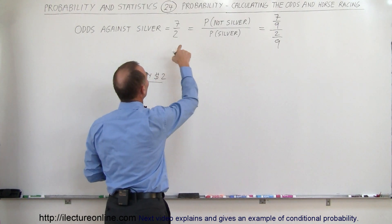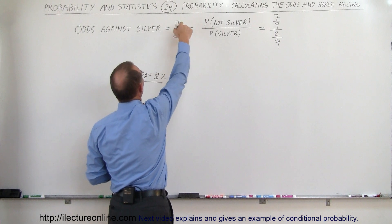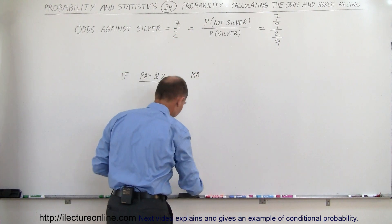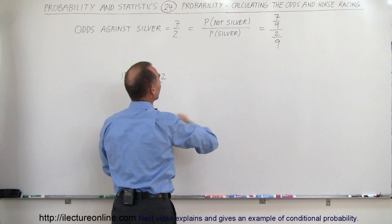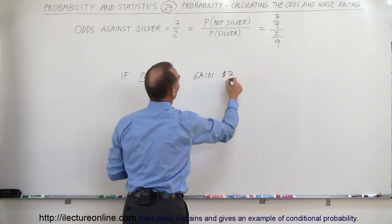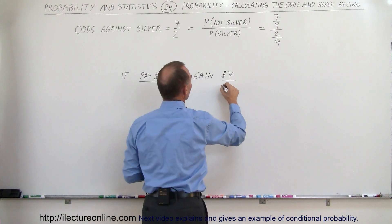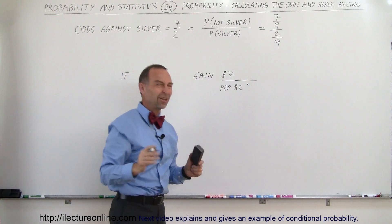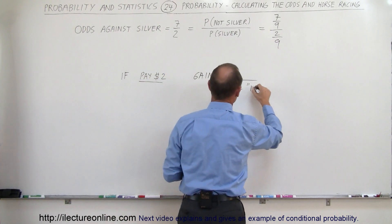So what that means is if you pay $2 and your horse wins and the odds against the horse is 7 to 2, then you'll make or gain, maybe I'll just write the word gain, so you'll gain $7 per $2 investment, and I'll just put that in quotes because it's not really a good investment of course when you start horse racing.